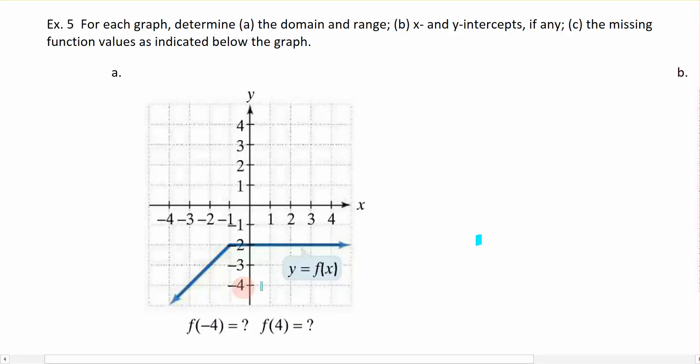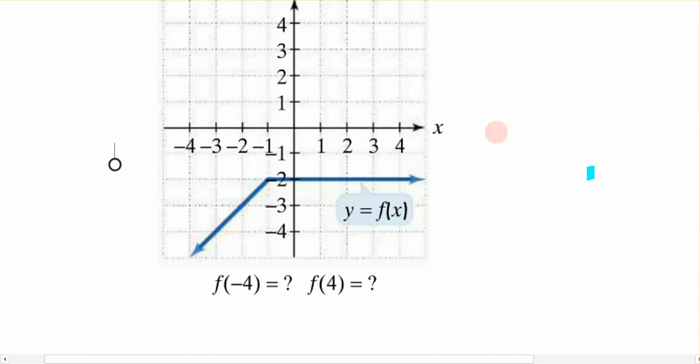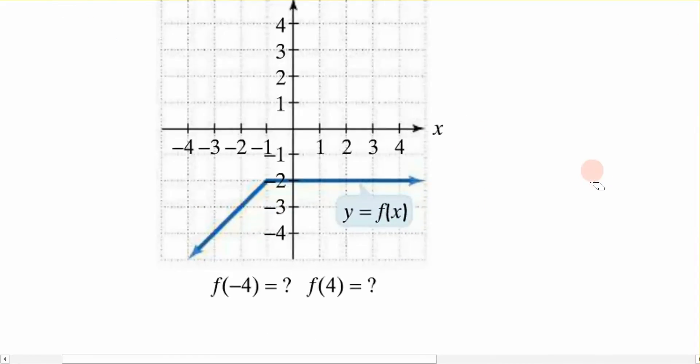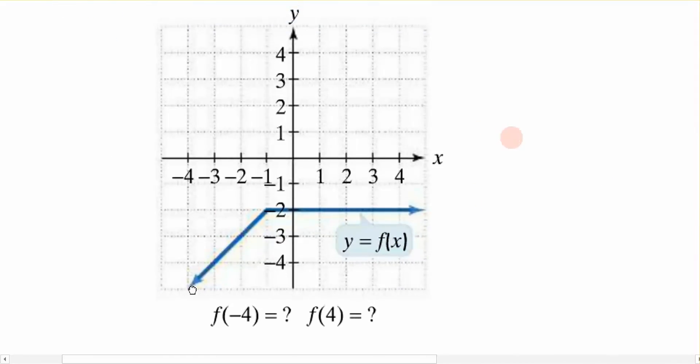We're going to start by looking at the graph that they've given us right here. They have defined the graph that is being shown, this blue line right here, as the function f of x. And we want to look at what the domain of that function is. Again, domain are all the possible x values, so the x values that would be allowed in the function.